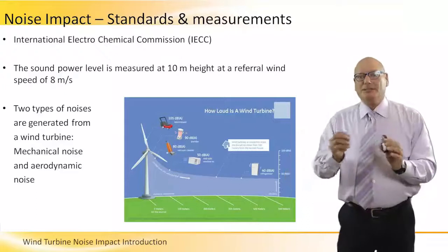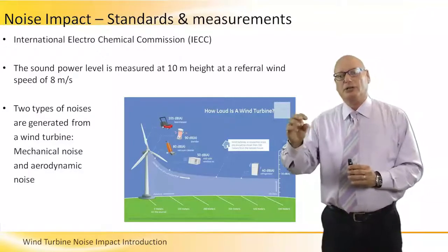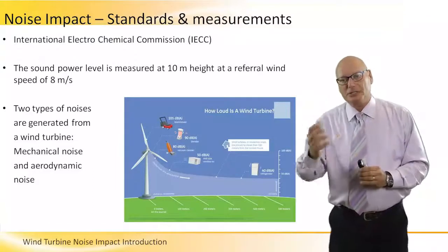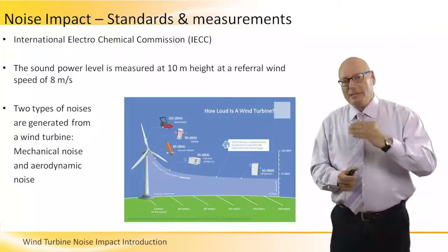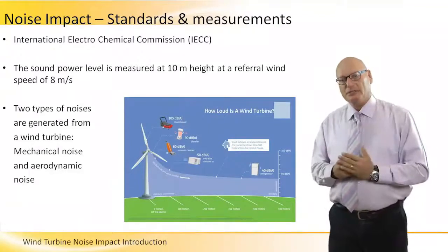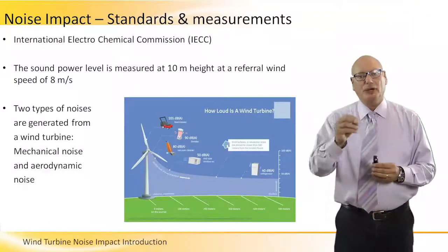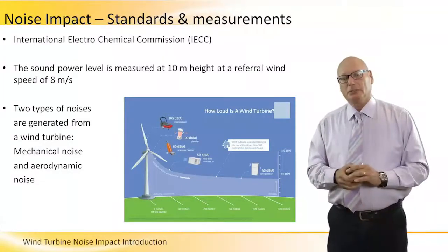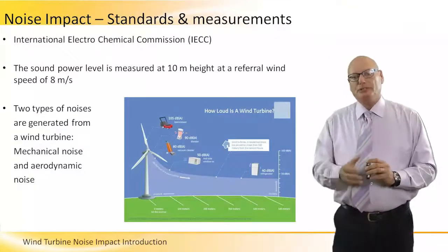Noise impact standards and measurements. There is a commission called the International Electrotechnical Commission, IEC, which came up with certain standards on how to measure the level of sound and how to limit the distance between the sound source and the listener. The sound power level is measured at 10 meters height at a reference wind speed of 8 meters per second. In terms of a wind turbine, there are two types of noises that are generated: mechanical noise and aerodynamic noise.